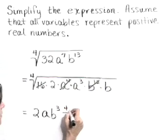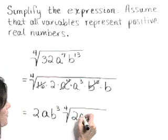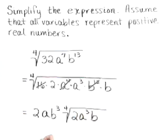This leaves underneath the radical 2, a to the third, and b. So our simplified answer is 2 a b to the third times the fourth root of 2 a cubed times b.